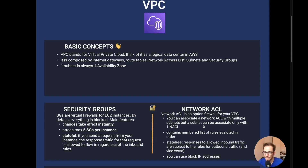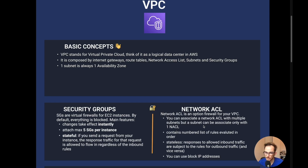The network ACL is stateless, meaning responses to allowed inbound traffic are subject to the rules of the outbound traffic. So if you allow SSH traffic on port 22 inbound, you also have to explicitly allow the SSH outbound traffic as well. Also remember that on the network ACL you can block specific IP addresses, whereas on the security group it's not possible — so if an exam question asks how to block a specific IP address, network ACL is the answer.